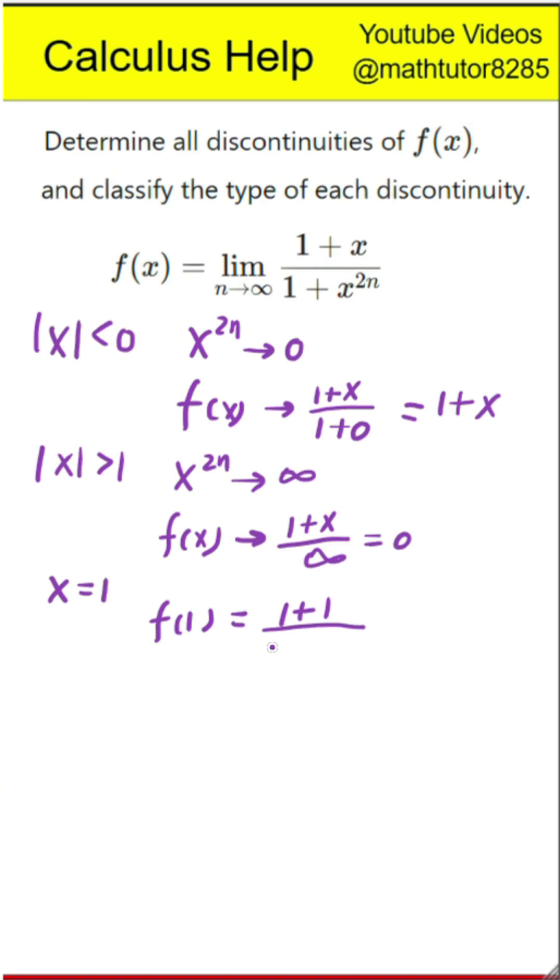Third, when x equals 1, the expression becomes 2 divided by 2, which is 1. Lastly, when x equals negative 1, the numerator is 0 and the denominator becomes 2. So the whole expression is 0.